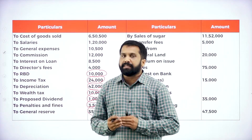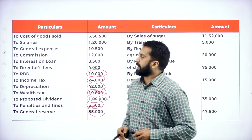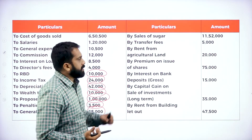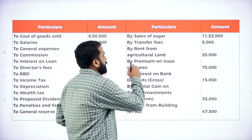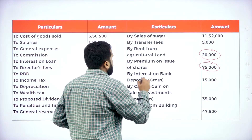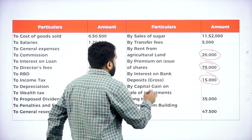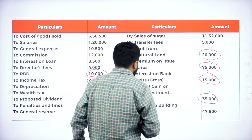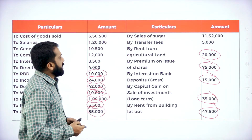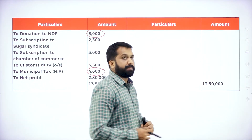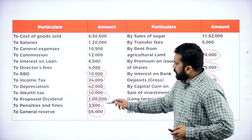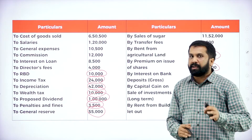Now, what are the other head income items? Where will you get credit-side entries? Sale of sugar — part of your business. Transfer fees also — part of business. Rent from agriculture land, yes. Premium on issue of shares, yes. Interest on bank deposit, yes. Capital gain on sale of investment, yes. Rent from building let out, yes. All these things come under other source items. This much only you are supposed to do.